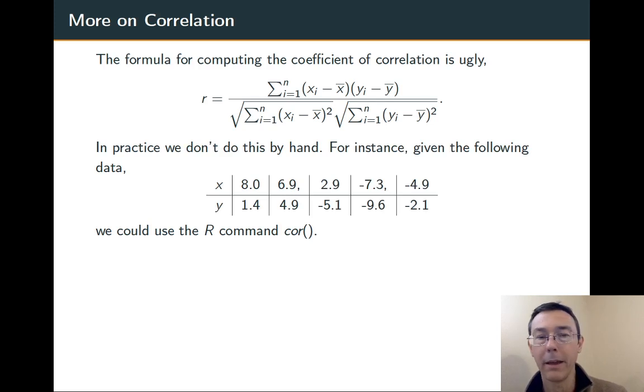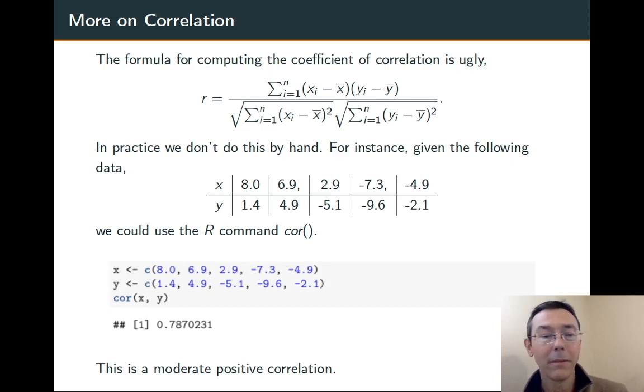In R, for example, the command is cor, and then you feed it the x value and the y value, the two variables you want to have correlated. So, with this table, if we encode the first row as x and the second row as y, and then do cor, parenthesis, x, comma, y, R will spit out the answer immediately. We get a correlation of 0.787, a moderate positive correlation.